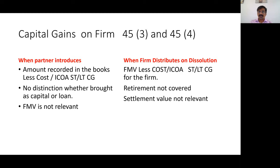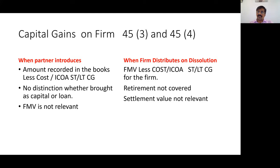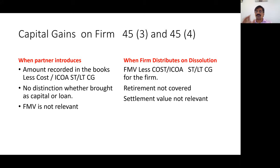When the firm distributes assets on dissolution, one partner may agree to take over a motorcar, a painting, or any asset at an agreed or settlement value. Section 45-4 says if a partner gets any asset on dissolution, the fair market value will be taken as deemed consideration. In 45-3, fair market value is irrelevant — book value is relevant. In 45-4, settlement value is not relevant but fair market value is relevant. In 45-3 the partner pays capital gains tax; in 45-4 the firm pays the capital gains tax.